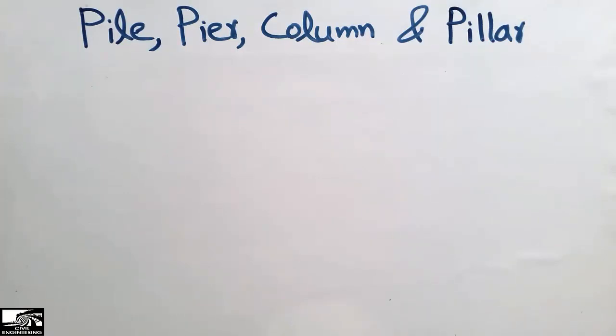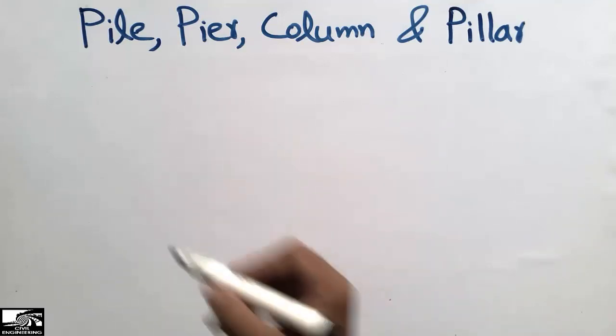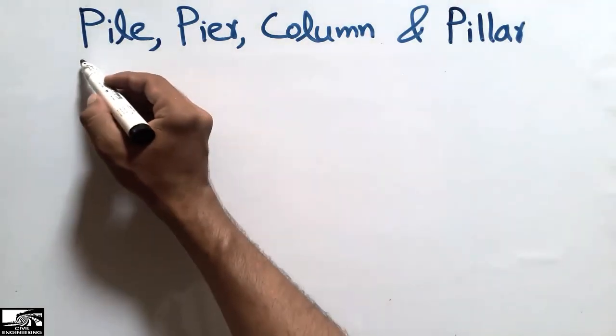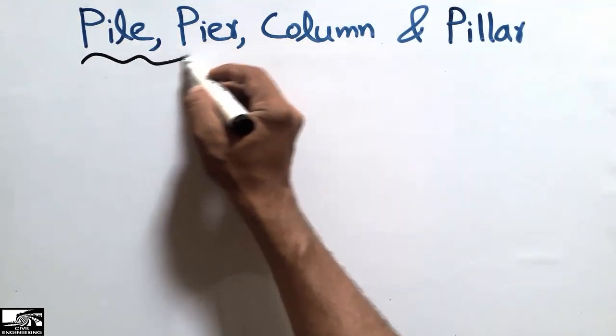Hello guys, welcome back to the Civil Engineering YouTube channel. Please subscribe to our channel for more Civil Engineering videos. Today our lecture is about the difference between the pile, pier, column, and pillar — these are four technical terms used in Civil Engineering.